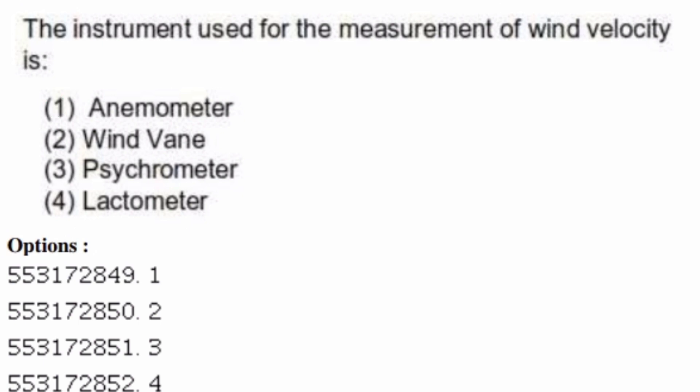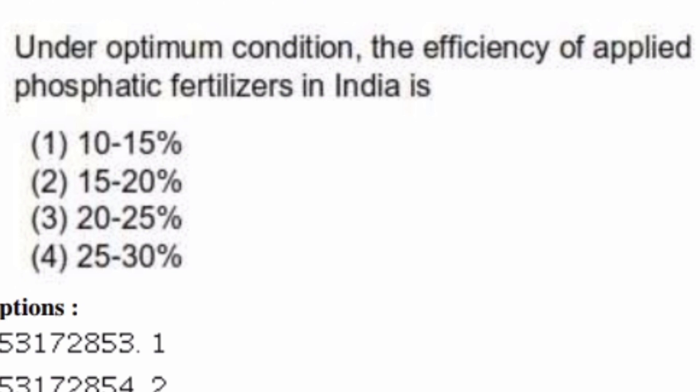Under optimum conditions, the efficiency of applied phosphatic fertilizers in India is — options are: 10–15%, 15–20%, 20–25%, 25–30%. The right answer is option four, 25 to 30 percent.